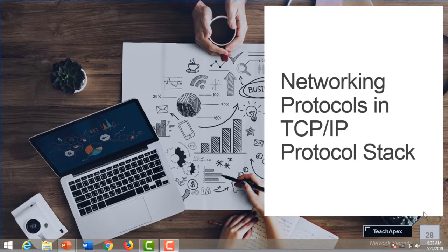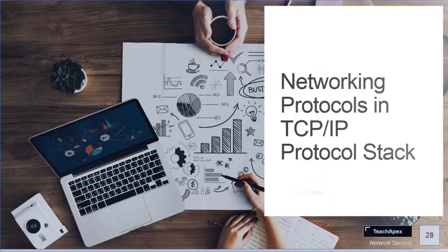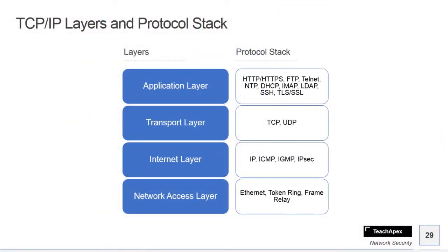Let's first check out the TCP/IP layers and the protocols related to those layers. As we have already discussed, the TCP/IP model has four layers: the Network Access layer, Internet layer, Transport layer, and the Application layer. Accordingly, we have respective protocols related to those layers.